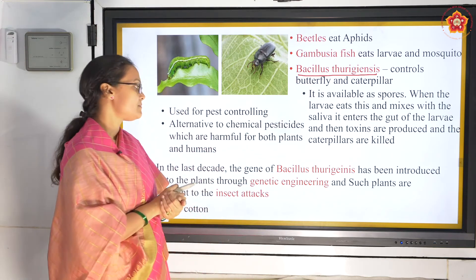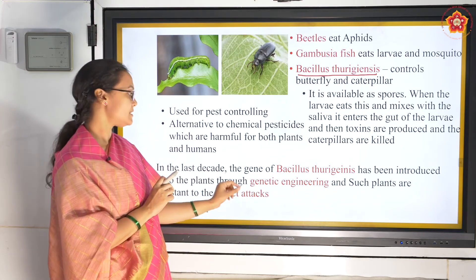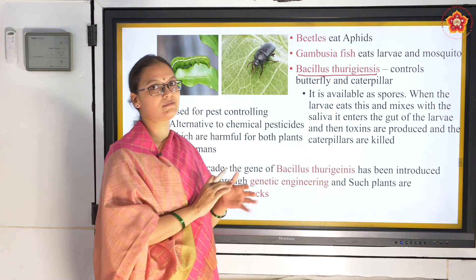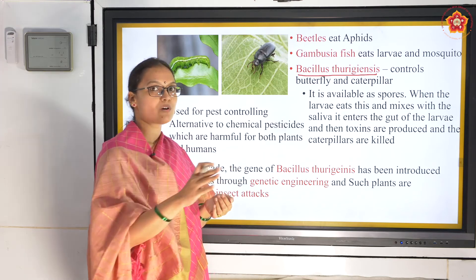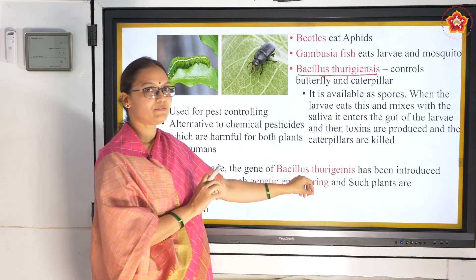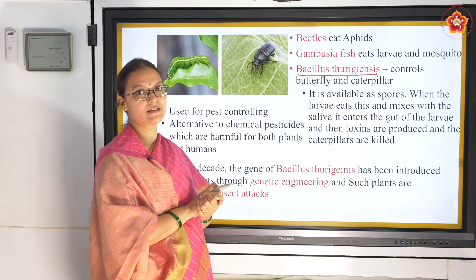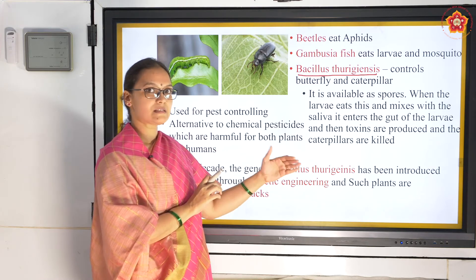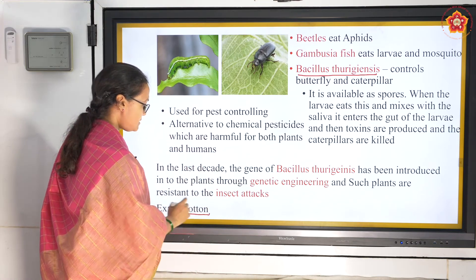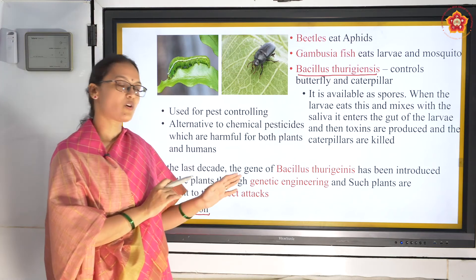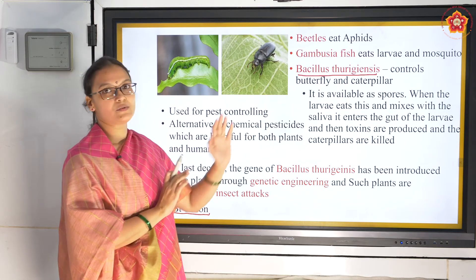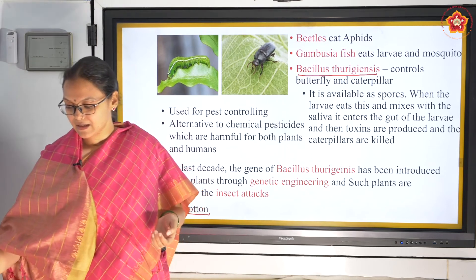Because of genetic engineering, they take the gene of Bacillus thuringiensis and introduce it into the plant itself. The whole crop becomes resistant to caterpillars - if a caterpillar eats a leaf, the pest is killed because the gene is already present in the plant. An example of this is Bt cotton - Bacillus thuringiensis cotton - since cotton crops are usually affected by caterpillar attacks.